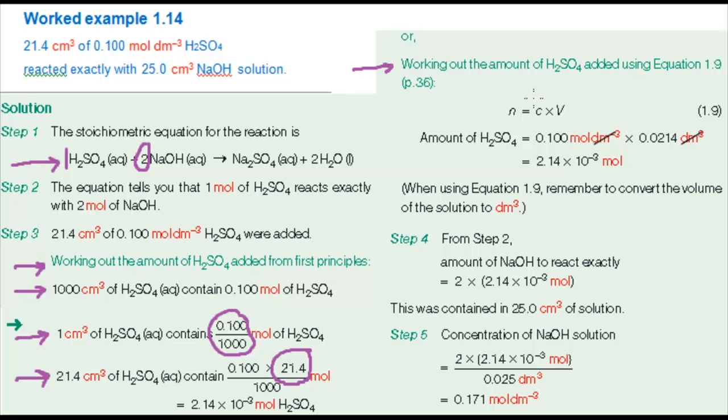Alternatively, you can use equation 1.9, N equals C times V, where N is the amount in moles, C is the concentration in moles per decimetre cubed, and V is the volume of solution in decimetres cubed. So, N, the amount of H2SO4, is C, the concentration, 0.1 moles per decimetre cubed, times the volume, 21.4 centimetres cubed, which we must convert to decimetres cubed, 0.0214. And that works out to the same amount of H2SO4 as by the previous method.